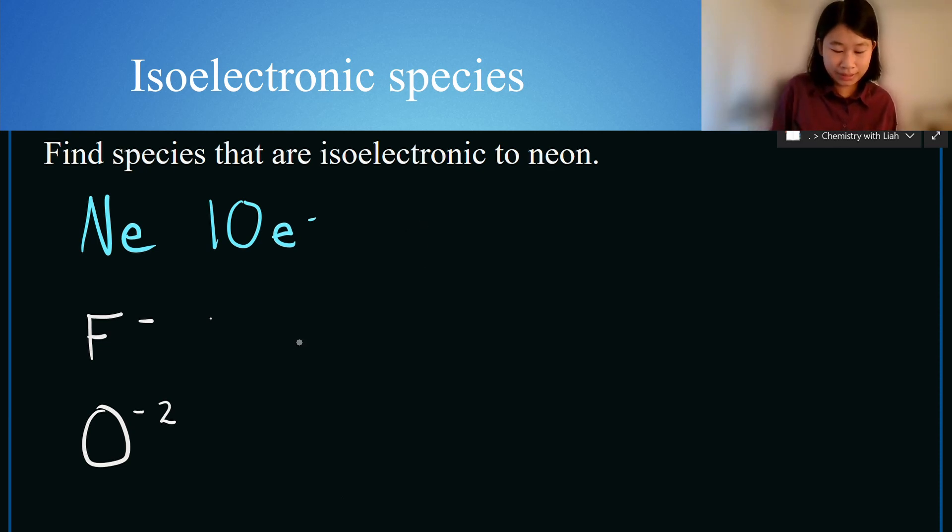So we can keep going further and we can put nitrogen. Nitrogen already has seven electrons and so we would add three electrons so it has 10. If we wanted to do this one, we could say carbon with a negative four charge, but this would also be isoelectronic to neon.